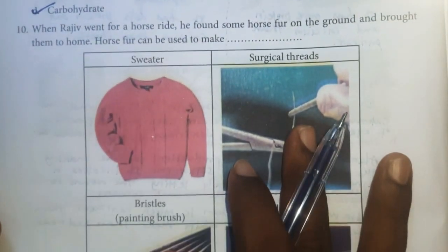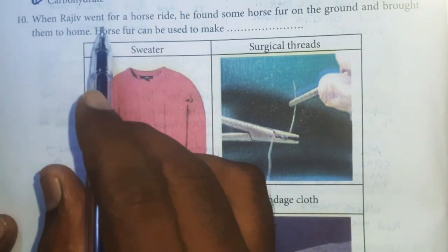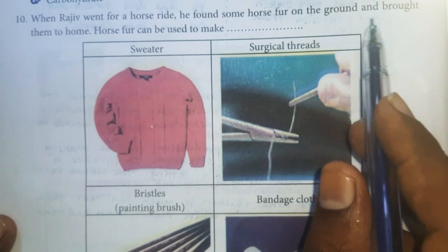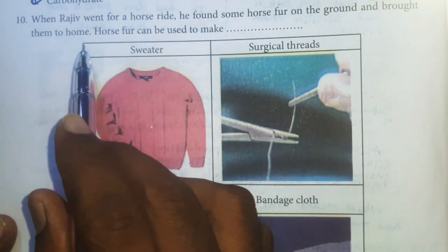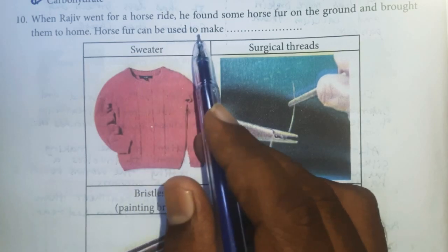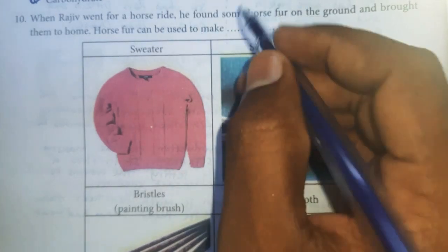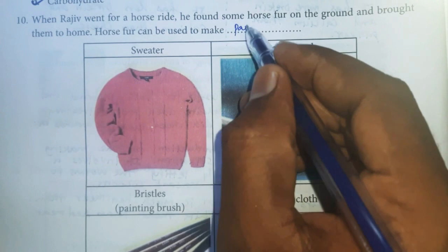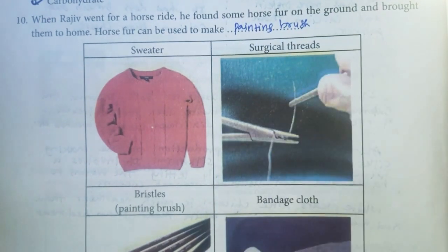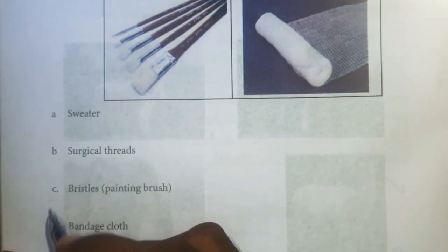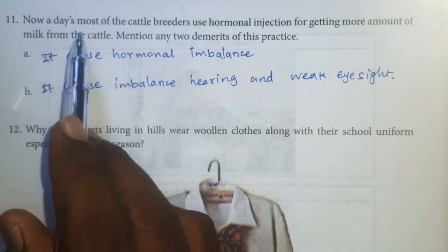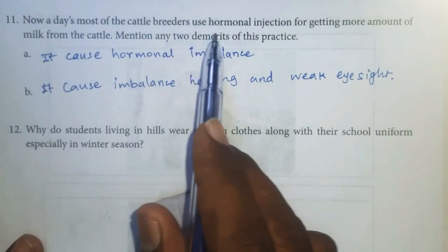Tenth one: When Raju went for a horse ride, he found some horse fur on the ground and brought them home. Horse fur can be used to make bristles, that is a painting brush. So option C is the right answer — bristles.